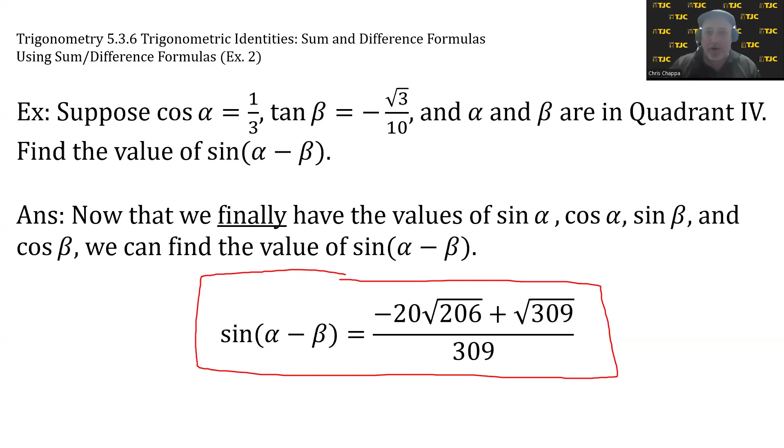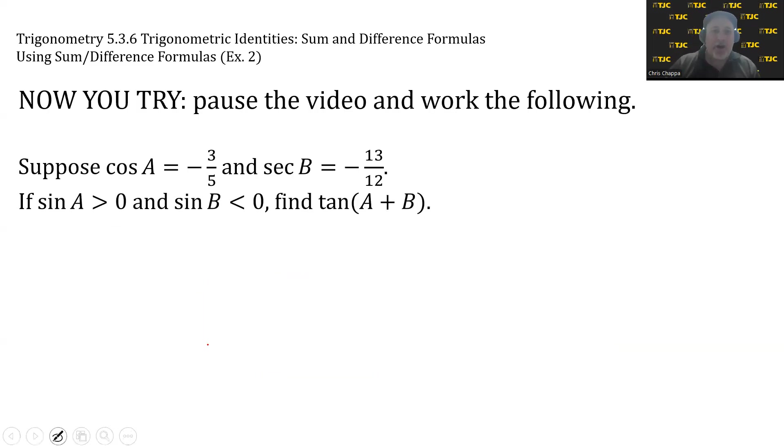I'm going to ask you to try one, and I promise this one works better. When you do the Pythagorean theorem on either of these, you don't have ugly square roots. Suppose cos A = -3/5 and sec B = -13/12. If sin A > 0 and sin B < 0, find tan(A + B). I am asking you to pause this video and try it.